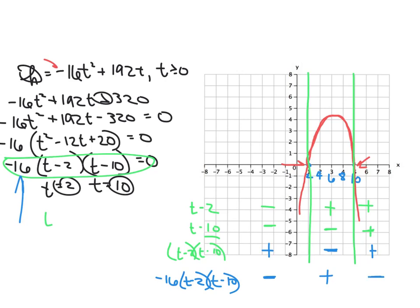So what happens when I multiply a positive times this negative? I get a negative. What happens when I multiply a negative times negative? I get a positive. And what happens when I multiply this positive times this negative? I again get a negative. So I get my answer when I'm between 2 and 10, which is what I discovered over here. So it's just kind of a way to check to make sure things are going according to plan.